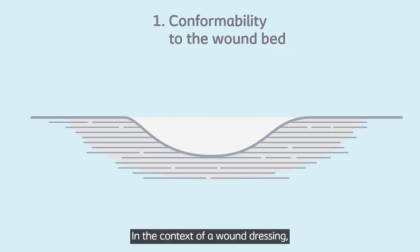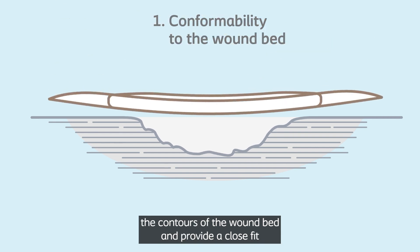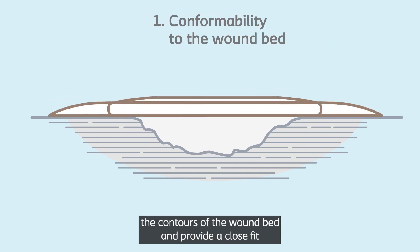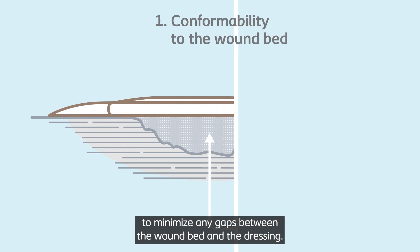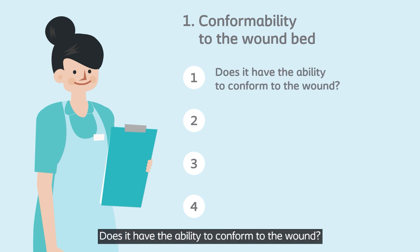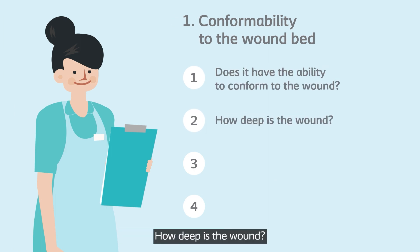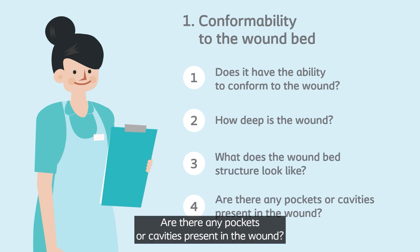In the context of a wound dressing, conformability to the wound bed means that it should closely follow the contours of the wound bed and provide a close fit to minimize any gaps between the wound bed and the dressing. Does it have the ability to conform to the wound? How deep is the wound? What does the wound bed structure look like? Are there any pockets or cavities present in the wound?